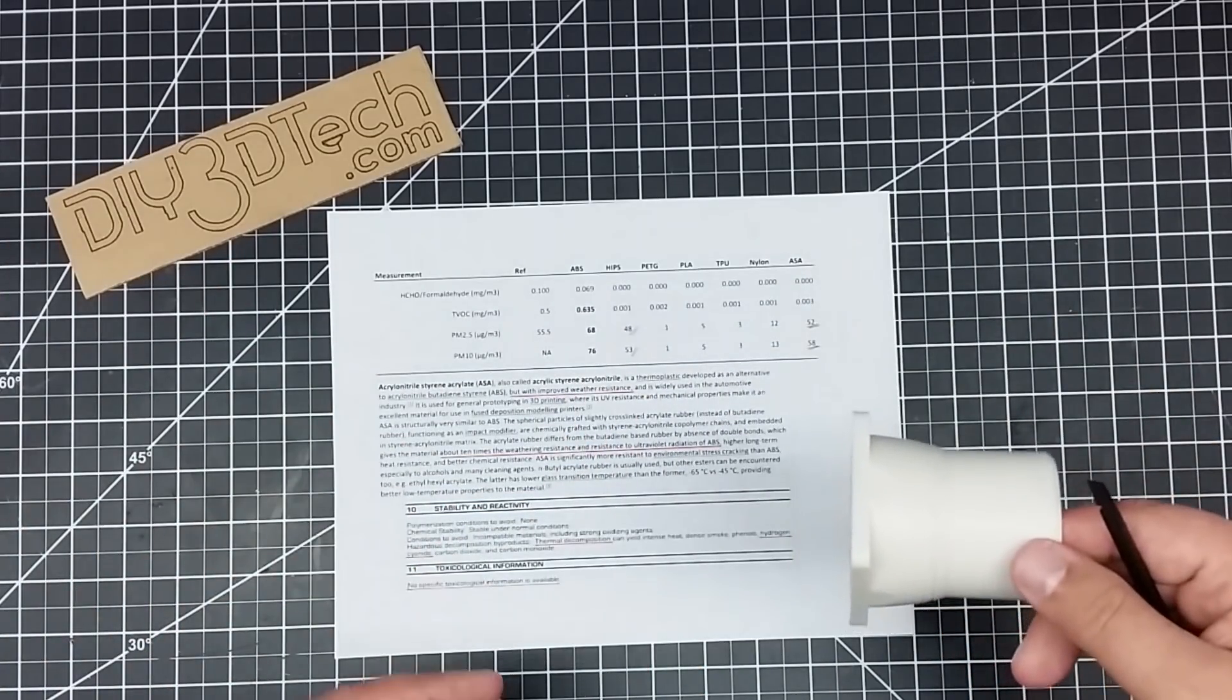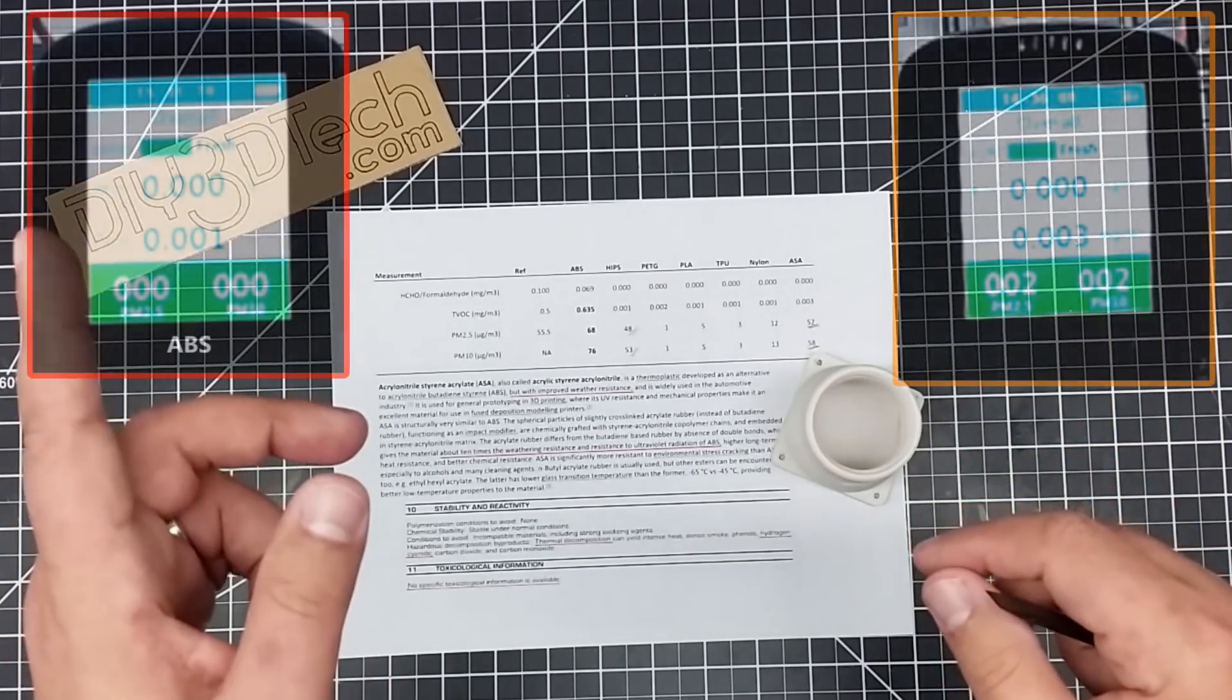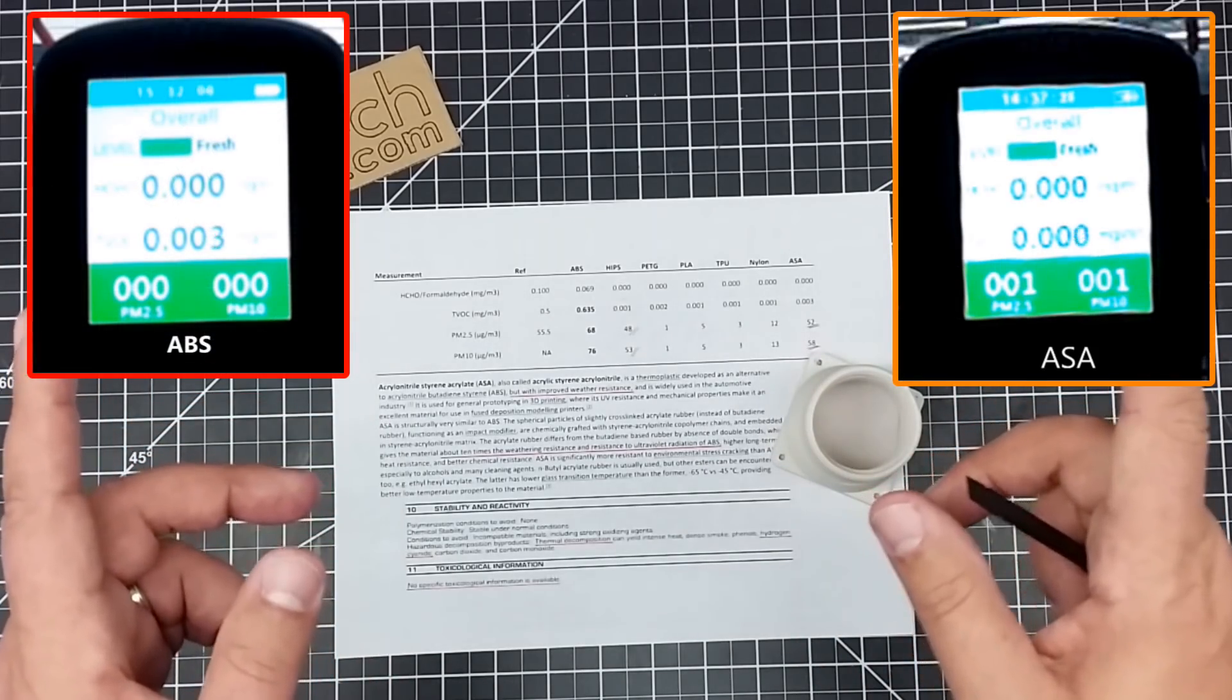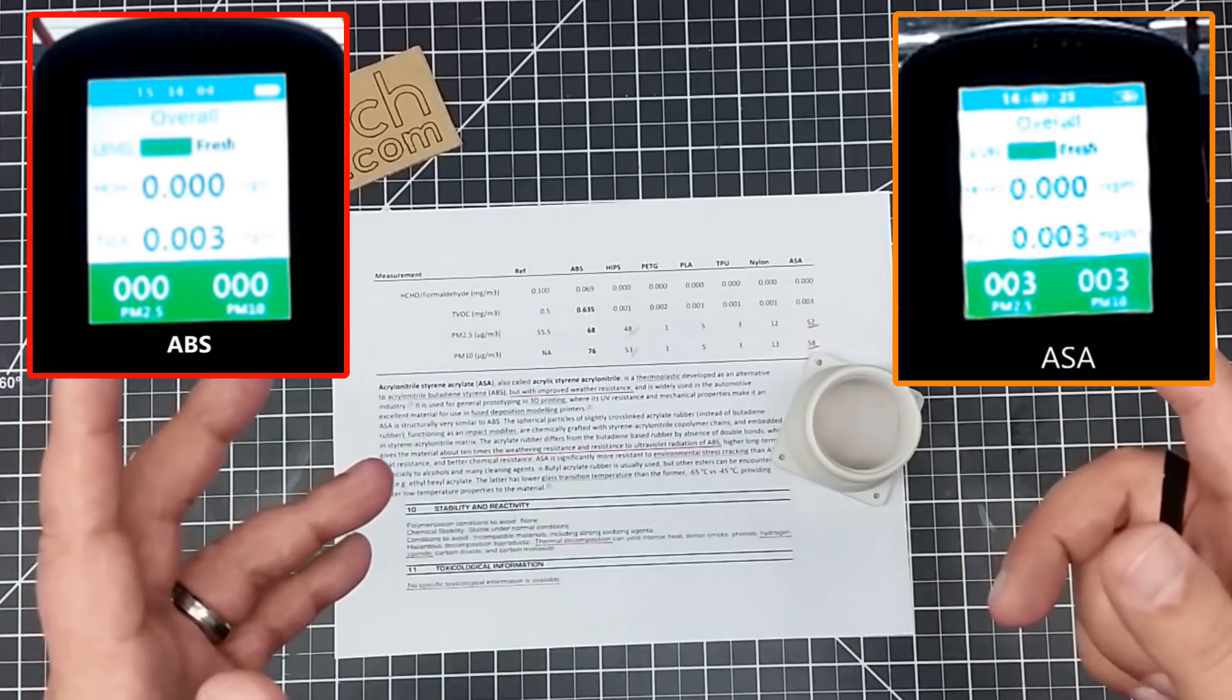But we're not here to talk about that. We're here to talk about air quality. So I'm going to go ahead, start off ABS over here, ASA over here, and we're going to see what it does while we talk about some of the statistics and a few more things.